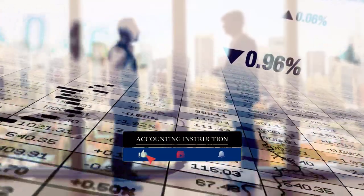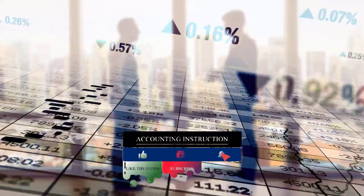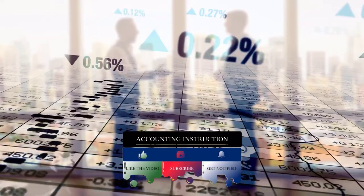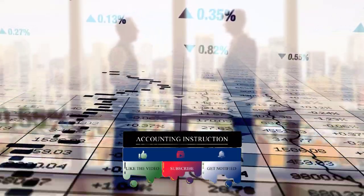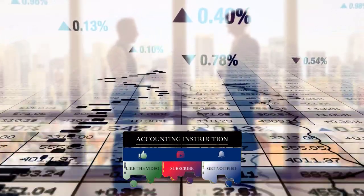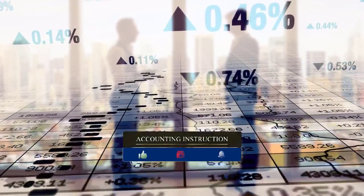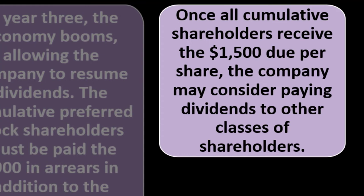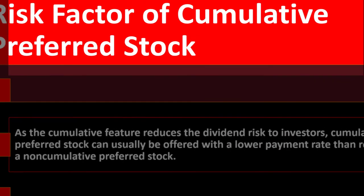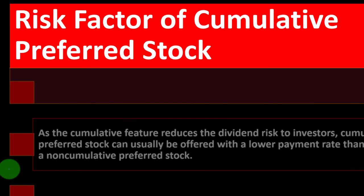The company was able to skip dividends in difficult times, but now that conditions have improved, they cannot pay common stockholders — who they want to keep happy since those shareholders vote — until they've paid the preferred dividends first, including all arrears. Once all cumulative preferred shareholders receive the $1,500 due per share, the company may then consider paying dividends to other classes of shareholders.